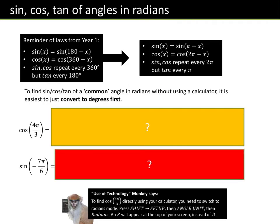This is A-level UK spec, not international. To find cos and tan of common angles in radians without a calculator, it's just easier to convert to degrees first — so we can convert to degrees and then find out.